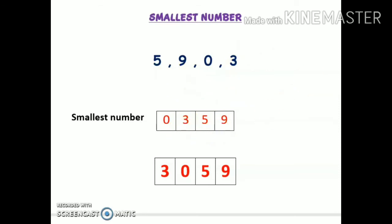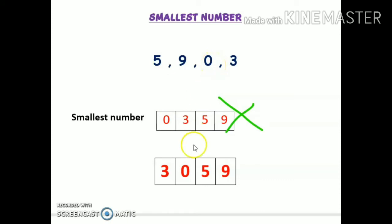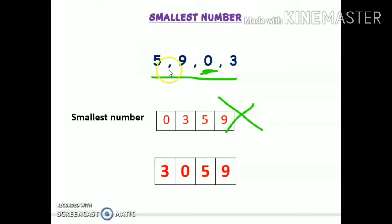So this is wrong. Whenever we have to form the smallest number from four numbers and zero is also included, always make sure that you do not take zero at the first place. Always consider taking zero at the second place. For example, exclude zero first. Now you have five, nine, and three — three is the smallest, so you will write three first, and then write zero.